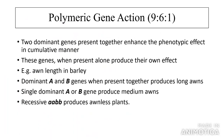Polymeric gene action: 9:6:1. Two dominant genes present together enhance the phenotypic effect in a cumulative manner, and when present alone, each produces its own effect. Example: awn length in barley — dominant A and B genes when present together produce long awns; a single dominant A or B gene produces medium awns; and recessive aabb produces awnless plants.